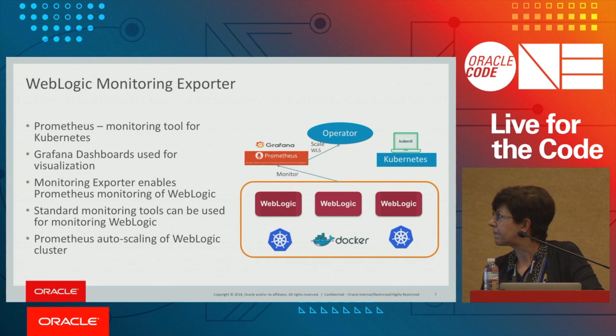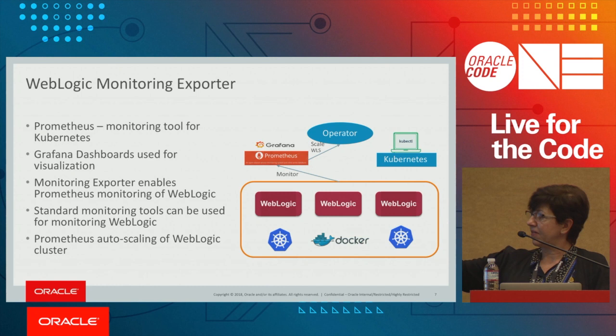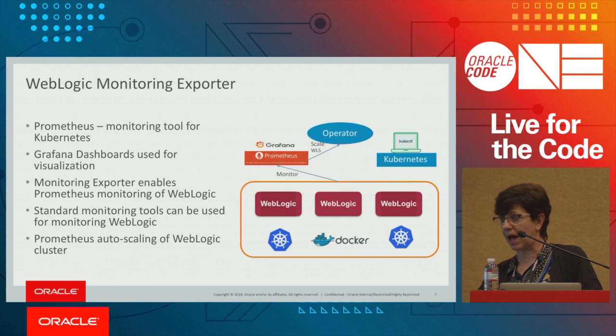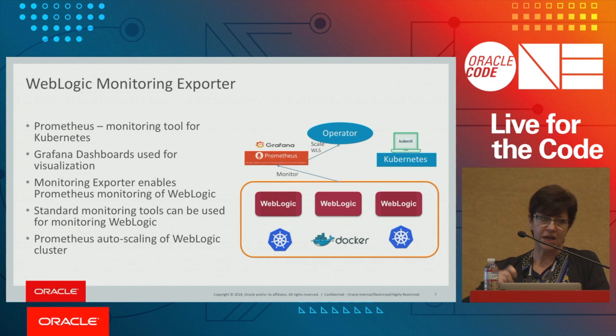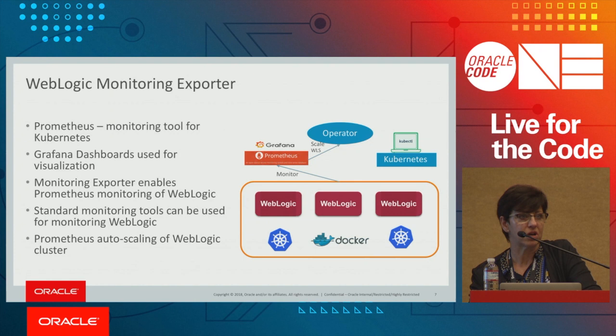The Monitoring Exporter has its own GitHub project called WebLogic Monitoring Exporter. It goes directly to managed servers to export runtime metrics — not through the admin server. Those metrics can be read in Prometheus, where you can set rules to scale or shrink, and you can build Grafana dashboards to monitor WebLogic server.